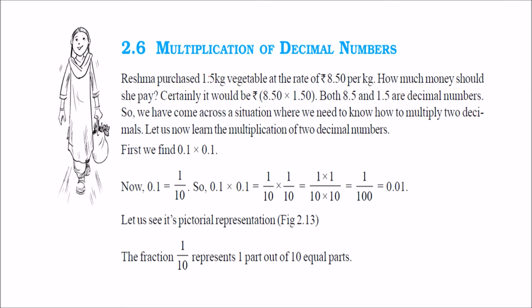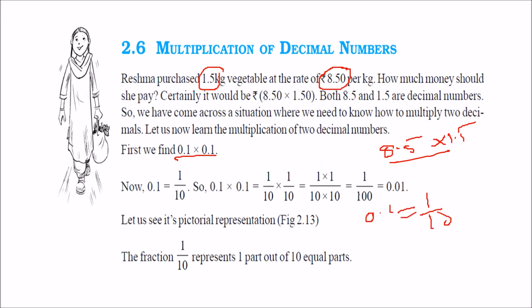For multiplication of decimal numbers, Reshma purchased 1.5 kg vegetable at 8.50 per kg, so we compute 8.5 into 1.5. There are two methods. First: 0.1 into 0.1 means 1 by 10 into 1 by 10 equals 1 by 100. Since there are two zeros, we need two digits after the decimal, giving 0.01. Second method: just multiply 1 by 1 to get 1, then since there are two decimal places total, place the decimal to get 0.01.